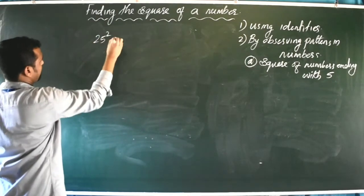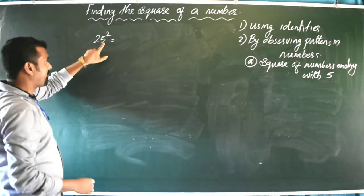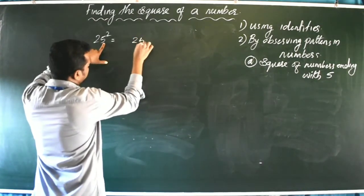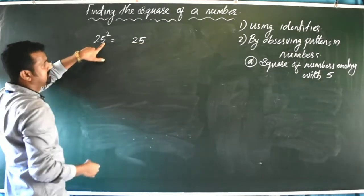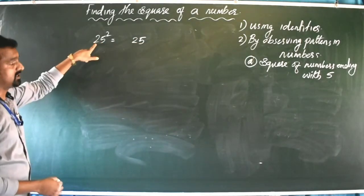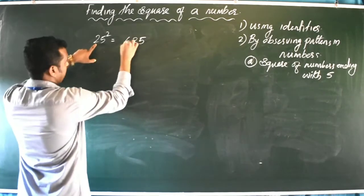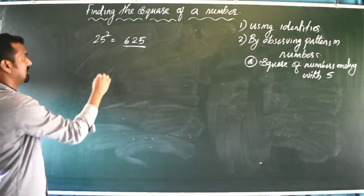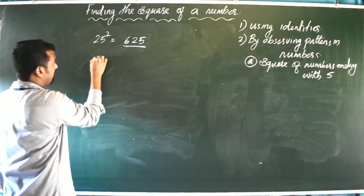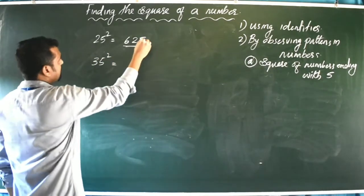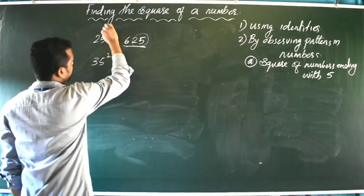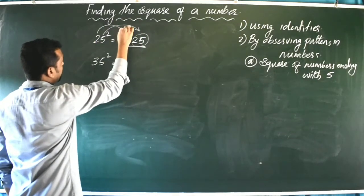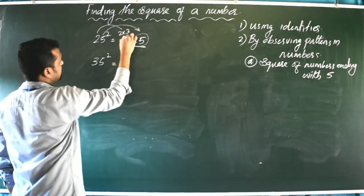For example, 25²: the last digit is 5, so 5 × 5 = 25 — we write 25 as the last two digits. The first digit is 2, and we multiply it by the next number: 2 × 3 = 6. So 25² = 625. For 35²: last digits are 25, and 3 × 4 = 12, so 35² = 1225.